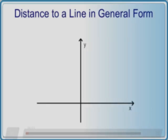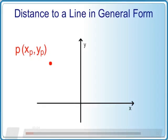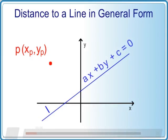We need to compute the distance from a given point P and a general line L with the rule ax plus by plus c is equal to zero.